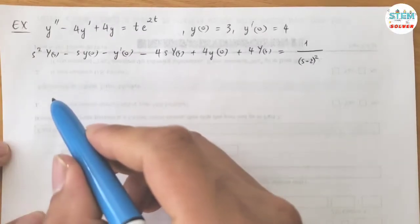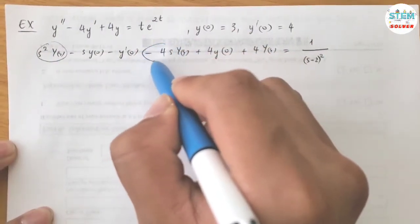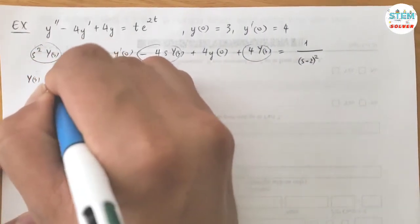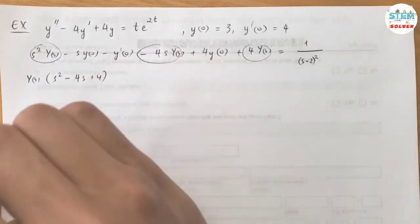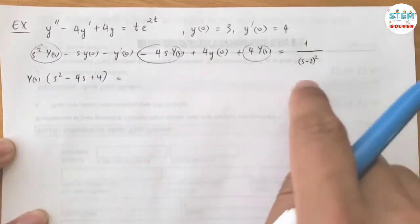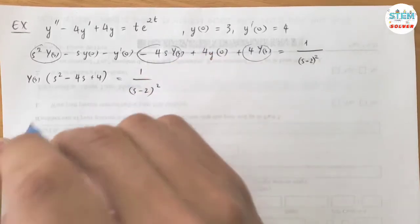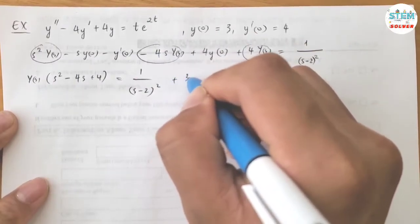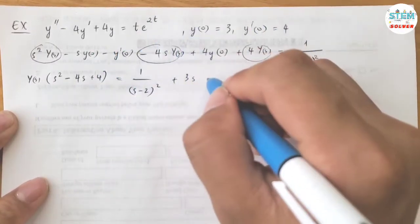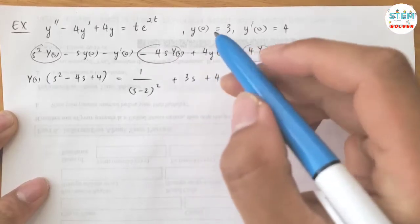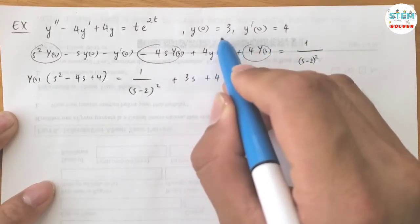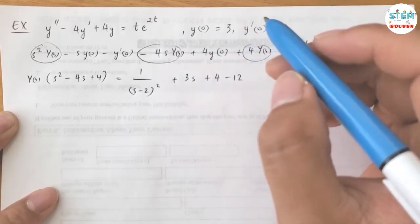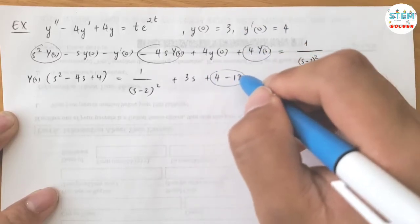Alright, now let's take a look at the capital Y of S's and factor capital Y of S out. Then I have S squared minus 4S plus 4 in parentheses equals 1 over S minus 2 squared. Y of 0 equals 3, so I have negative 3S, move to the right side which is positive 3S. Y prime of 0 equals 4, so negative 4 move to the right side, positive 4. Y of 0 equals 3, so 4 times 3 is 12, move to the right side, negative 12.